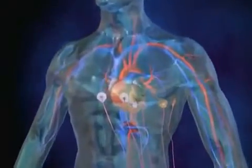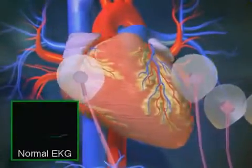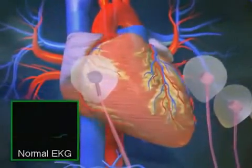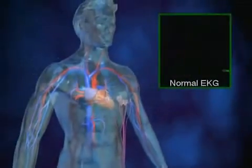The heart is a muscle that contracts in rhythmic sequence for the duration of our lifetime. Each beat is stimulated by an electrical signal that is generated by the heart's conduction system. A normal heart beats 60 to 100 times per minute.